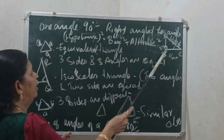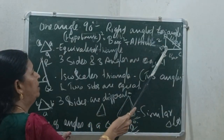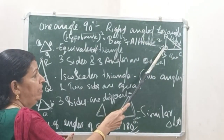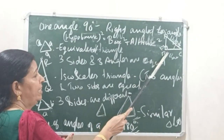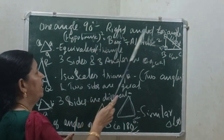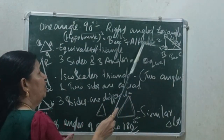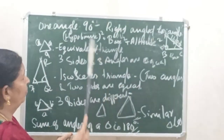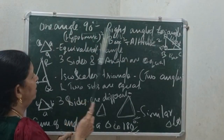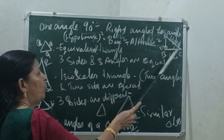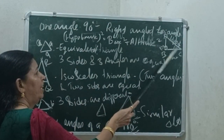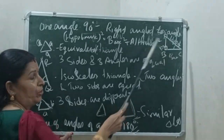In this right triangle, we have a 90-degree angle. This is the opposite side of the triangle. This is Karnam — the hypotenuse.